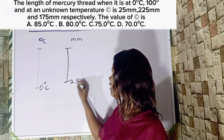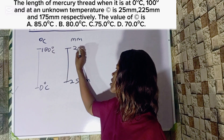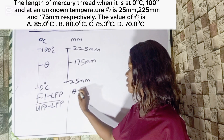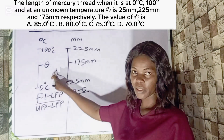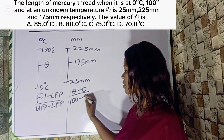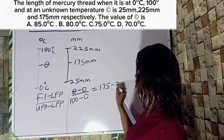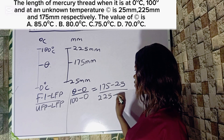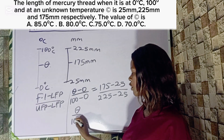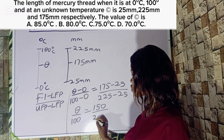When the Celsius scale reads 0 degrees Celsius, the mercury reads 25 millimeters. When it reads 100 degrees Celsius, the mercury reads 225 millimeters. So we set up: theta minus 0, divided by 100 minus 0, equals 175 minus 25 divided by 225 minus 25. This simplifies to theta over 100 equals 150 over 200.